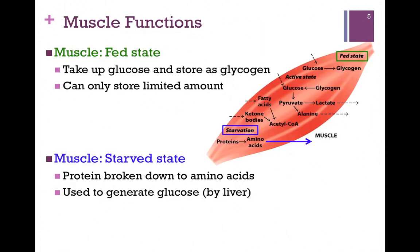Let's look next at the muscle. First, in the fed state: it will take up glucose, use a certain amount, and store the rest as glycogen. But remember, it only has a limited storage space.